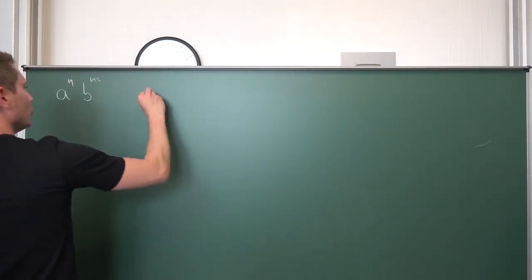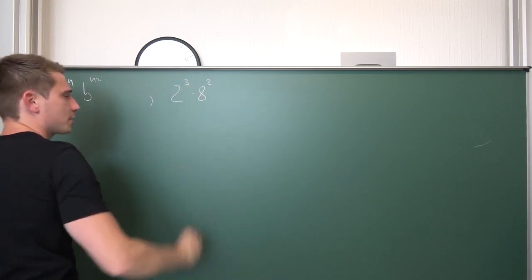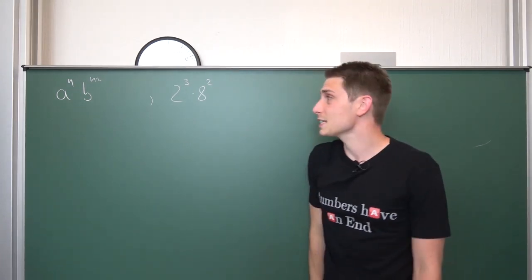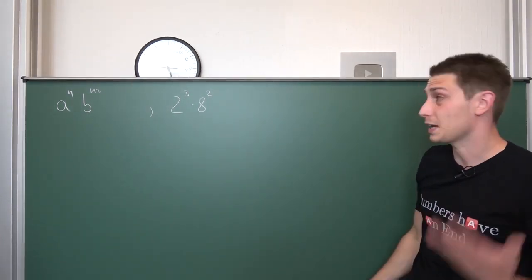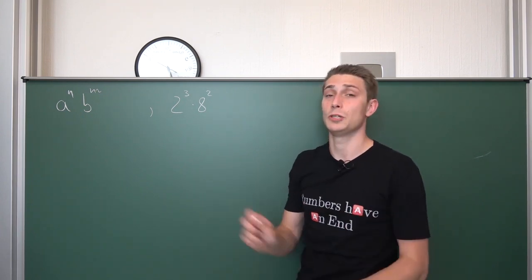We are going to take a look at a simple example for now. For example, 2 to the 3rd power times 8 squared. And at first glance, it doesn't look like we can simplify anything here. I mean, we have different bases and different exponents. What can we do here?